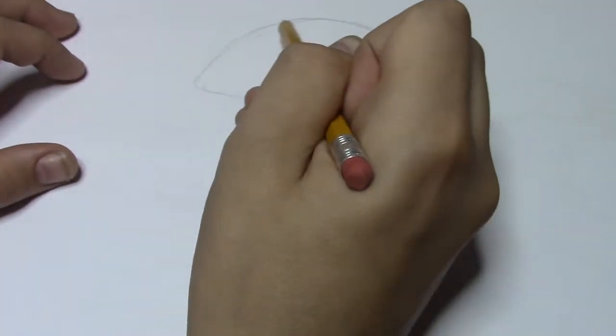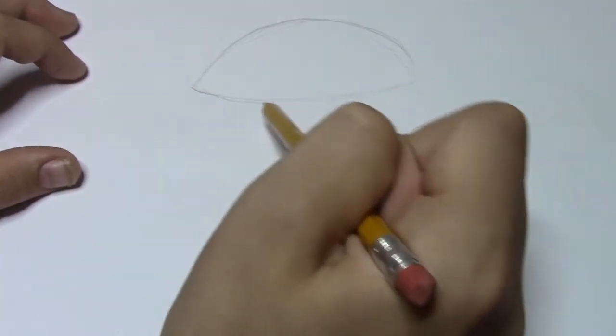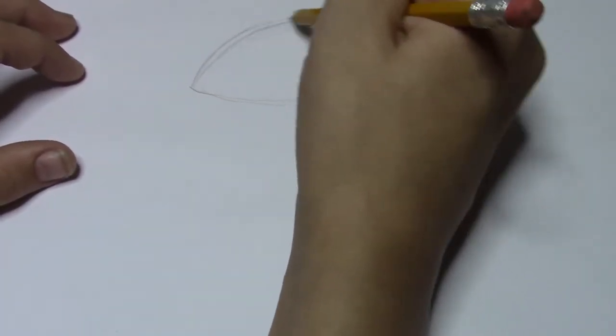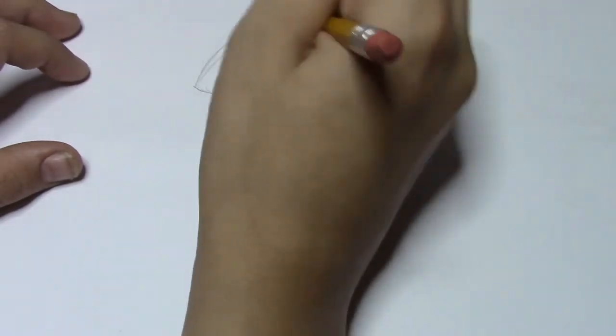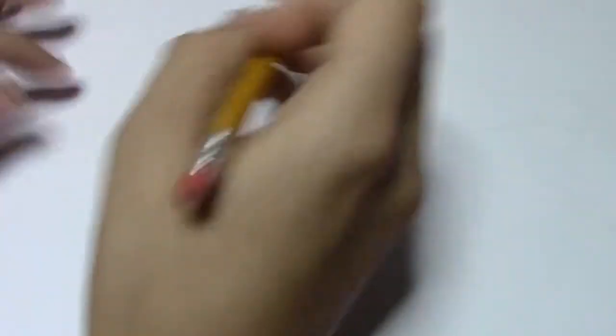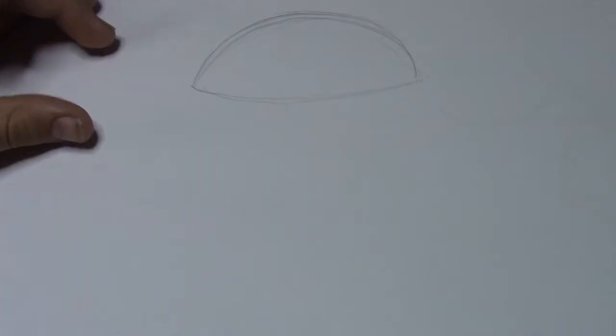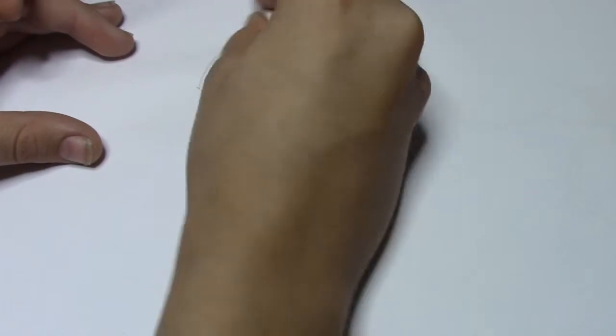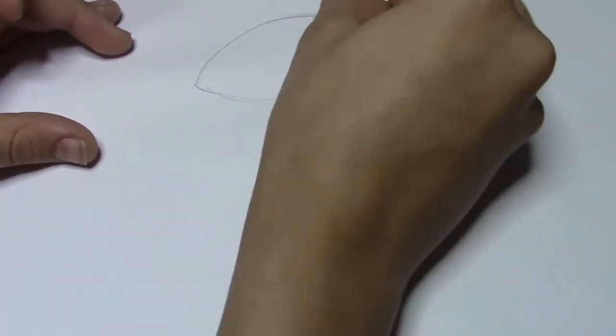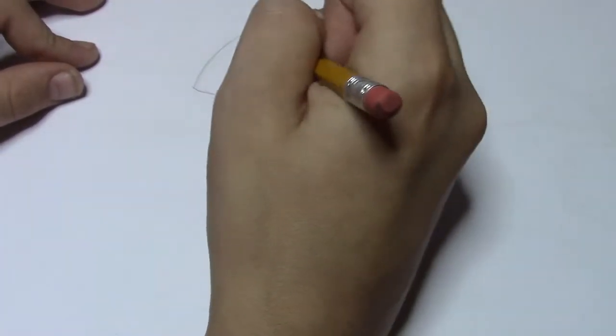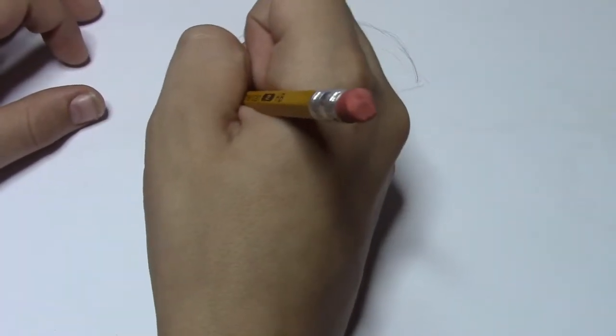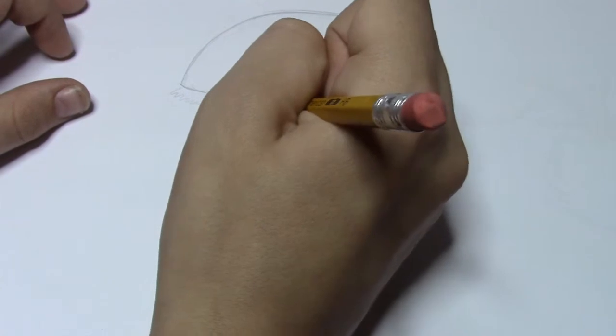We're going to start off with like a semicircle, but at the bottom instead of it being flat, it's going to be just slightly curved. With sketches, a lot of times it's fine to be messy, but if there's any lines that might mislead you, you should be sure to get those out.